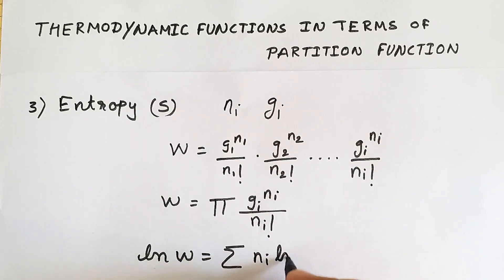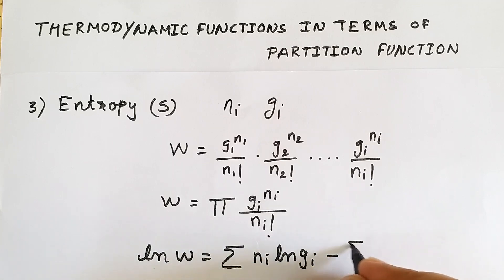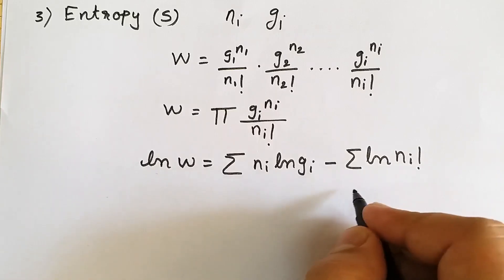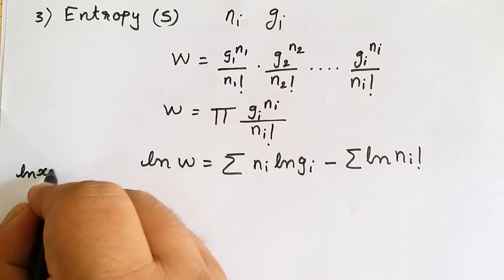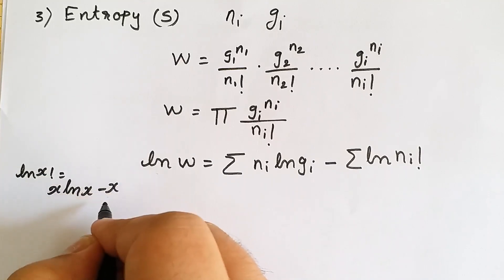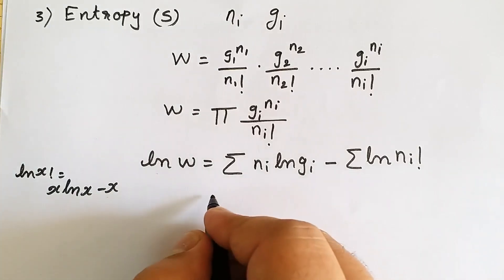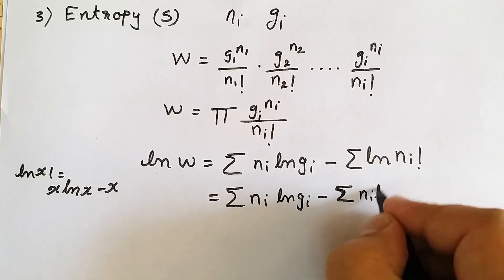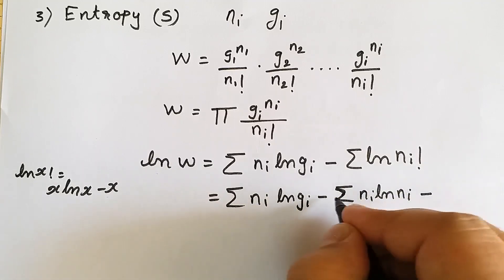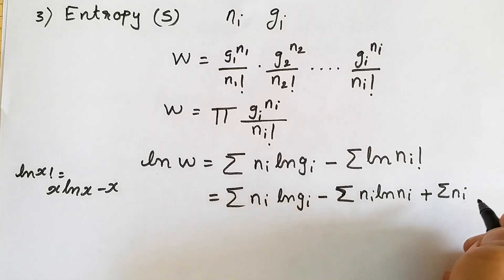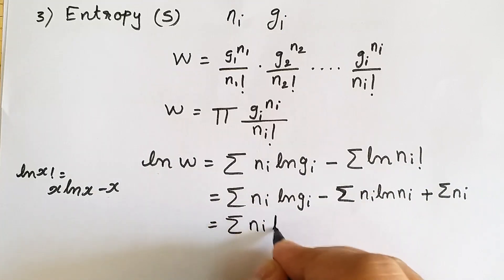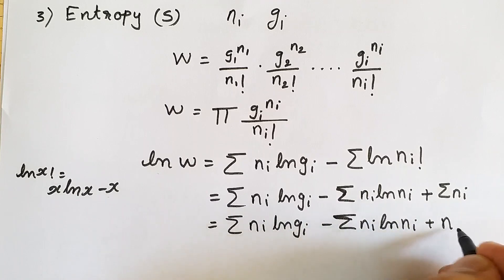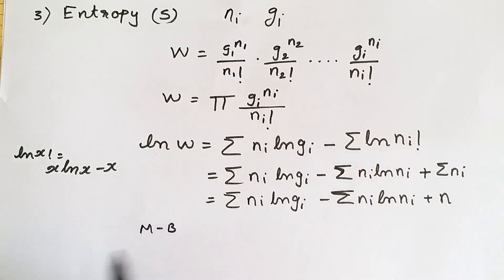So ln(W) equals summation of Ni·ln(gi) minus summation of ln(Ni factorial). Now we apply Stirling's approximation, which states that ln(x!) can be written as x·ln(x) minus x. Using this approximation on the factorial term, we get minus summation of Ni·ln(Ni) plus summation of Ni. Summation of Ni can be written as N, giving us summation of Ni·ln(gi) minus summation of Ni·ln(Ni) plus N.